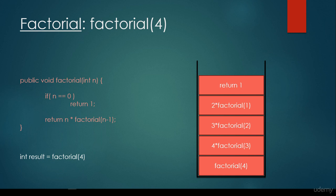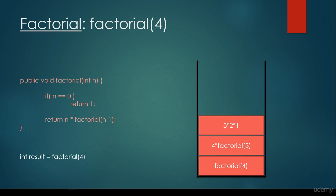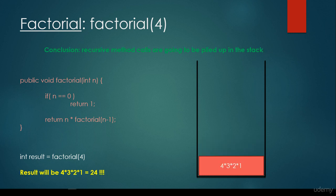The factorial of 0 equals 1 — that's the base case, so we return 1. From now on, we backtrack: we substitute the sub-solutions into the method calls. 2 times 1 is 2, then 3 times 2 times 1, and finally the result is 4 times 3 times 2 times 1, which is 24.